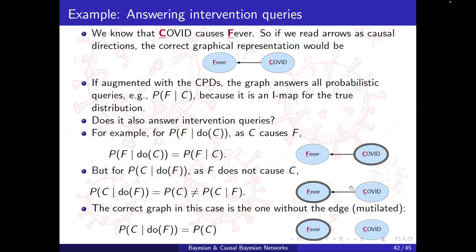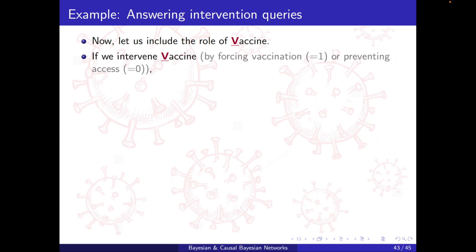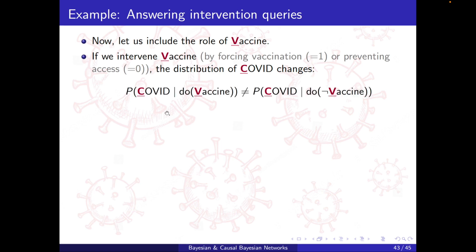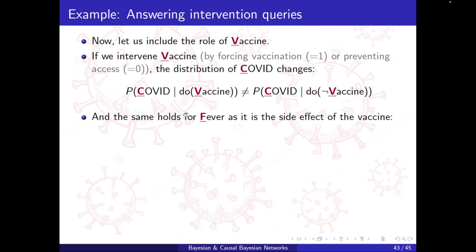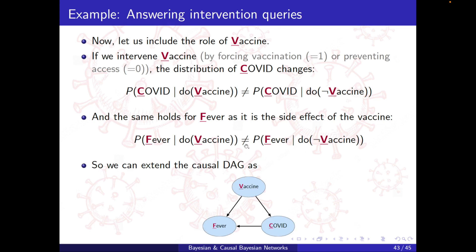Now let me include the role of vaccine. If we intervene on vaccine by forcing or preventing vaccination, the distribution of COVID changes — it becomes more likely when preventing vaccination. So vaccine causes COVID. Similarly, when we force or prevent vaccine, the distribution of fever as a side effect can change. So vaccine also causes fever, and the resulting causal graph includes these relationships. I'm using the intervention tool as a way to detect causality here.